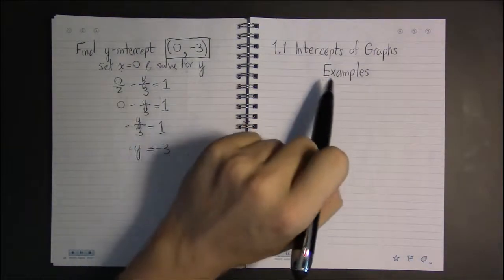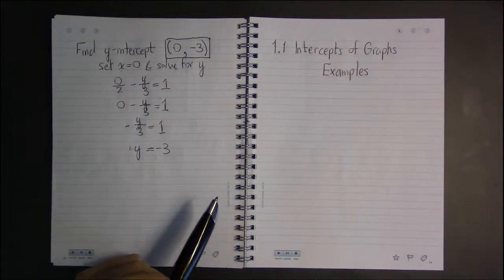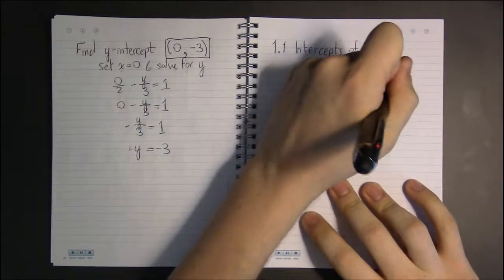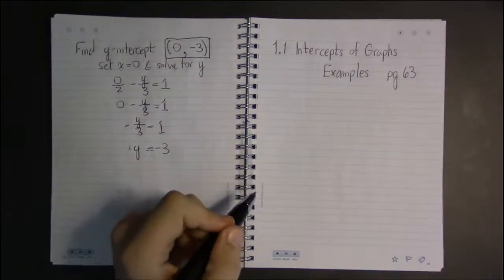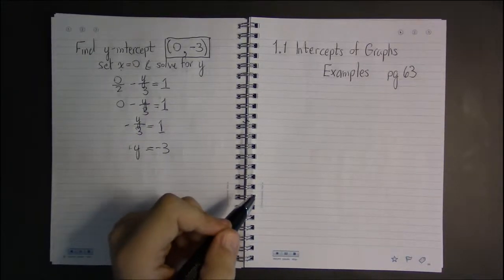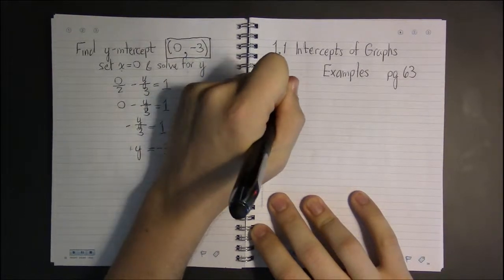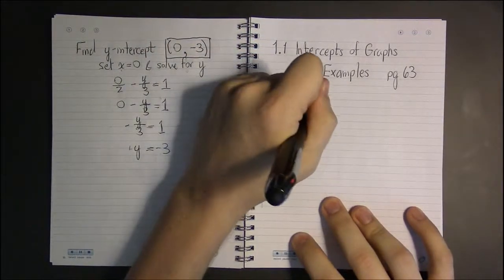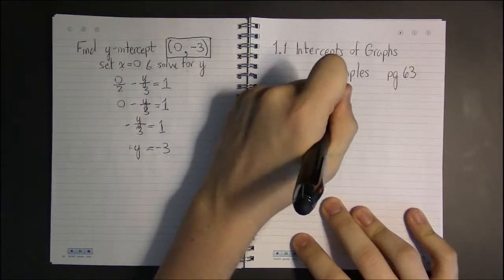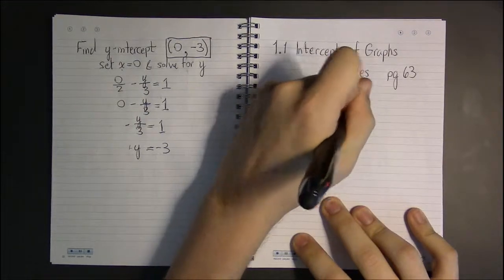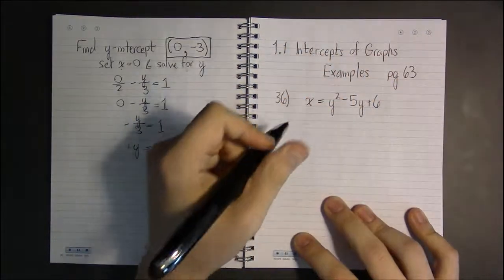Let's look at more examples of computing x and y-intercepts of graphs. I'm looking at page 63 of section 1.1. Let's look at something like example 36. We're supposed to find the x-intercepts of the following equation: x equals y squared minus 5y plus 6.